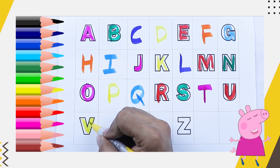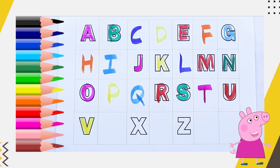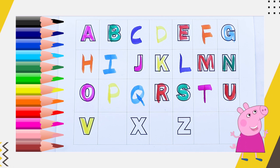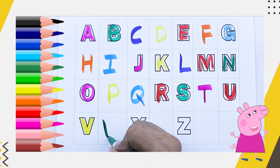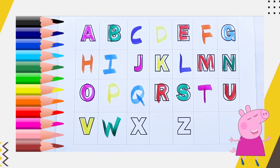V, yellow color, V for van. What is the next? W, green color, W, W for watch.